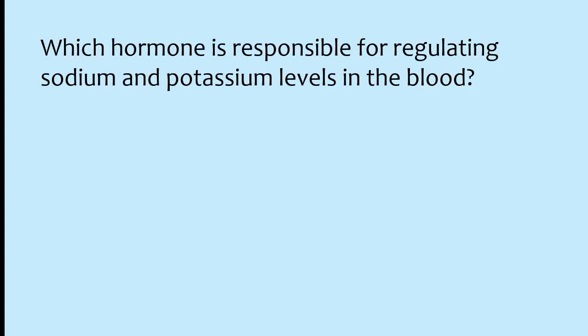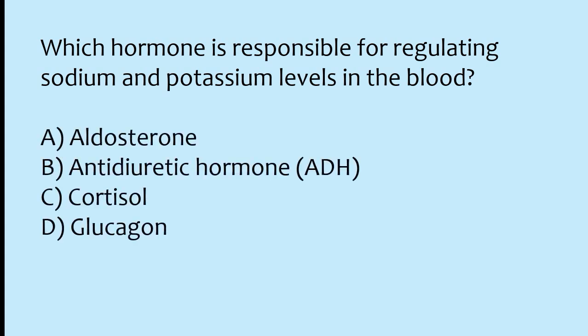Which hormone is responsible for regulating sodium and potassium levels in the blood? Options: aldosterone, antidiuretic hormone (ADH), cortisol, glucagon. The correct answer is option A: aldosterone hormone is responsible for regulating sodium and potassium levels in the blood.